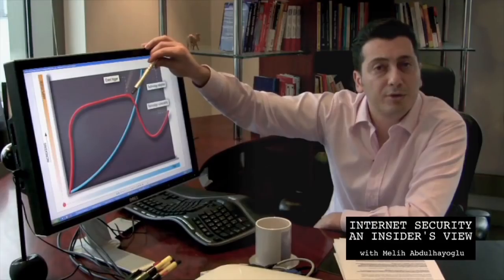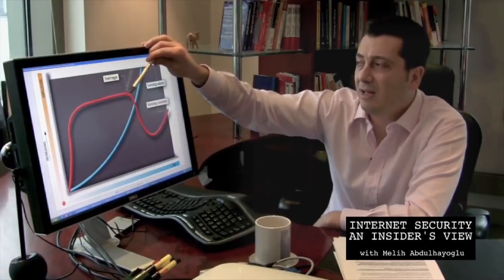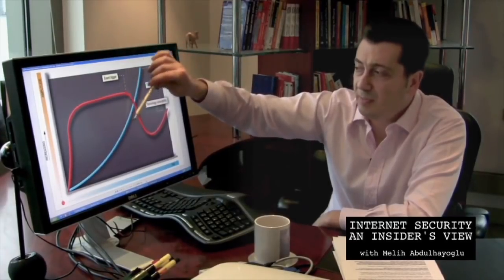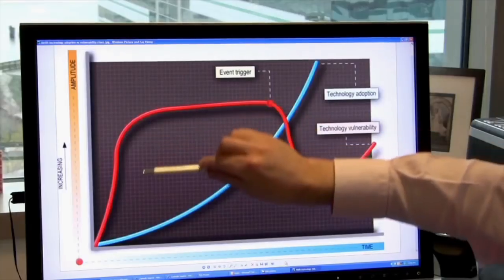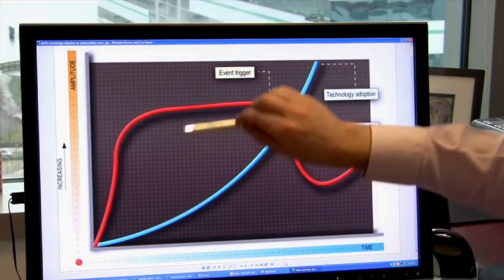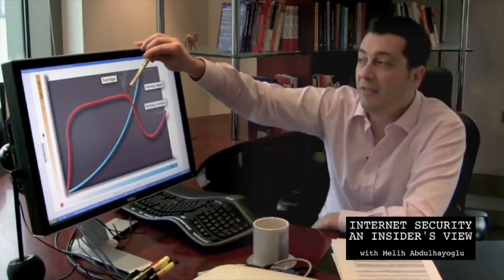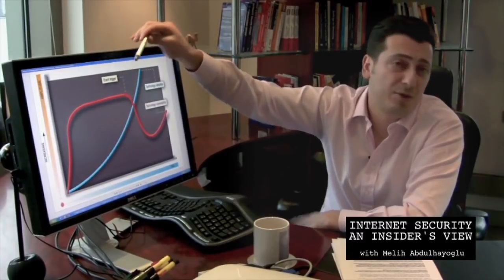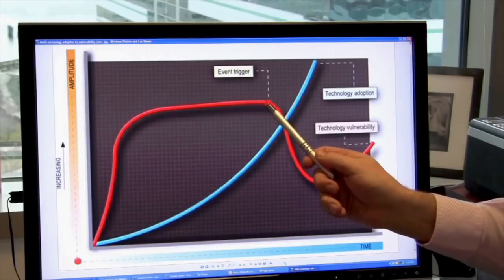You get an event trigger point where it makes you realize this dependency we built has created vulnerability. This event trigger could be a drastic incident, and then we start thinking about security.